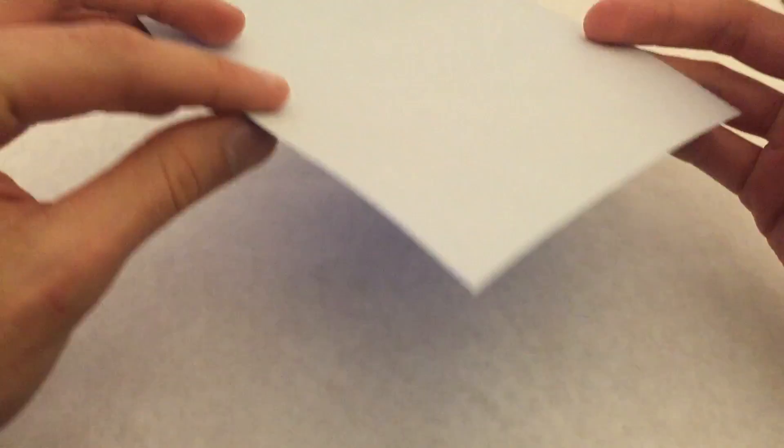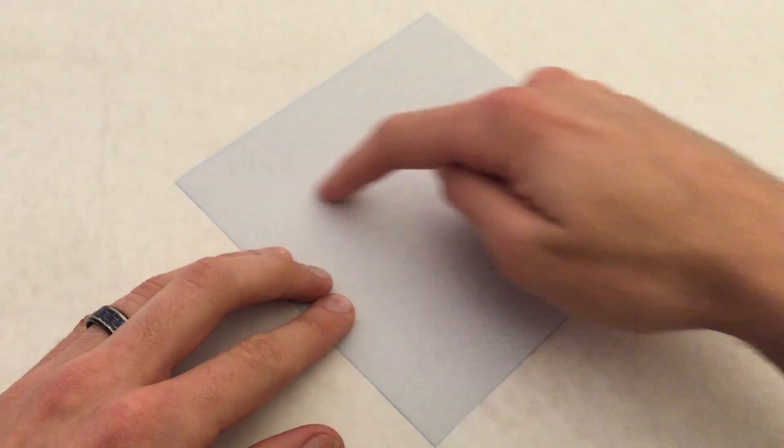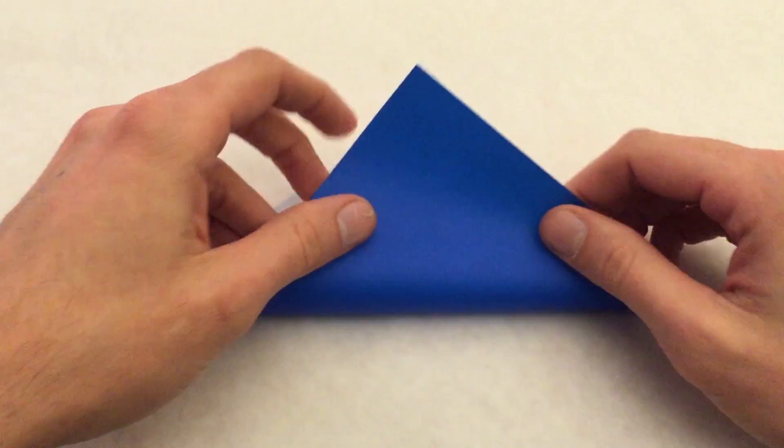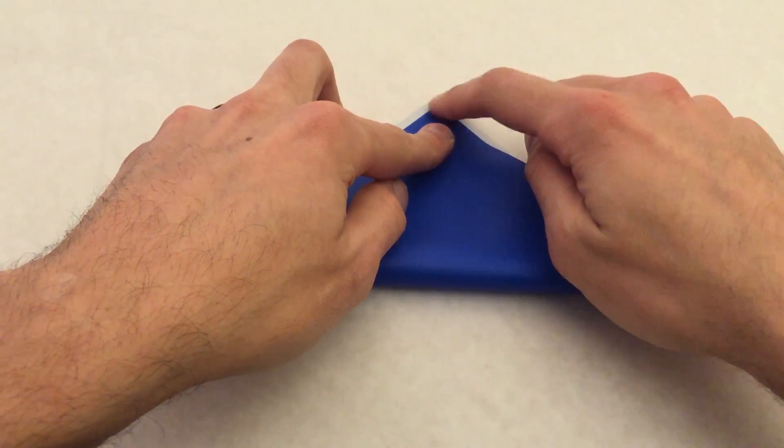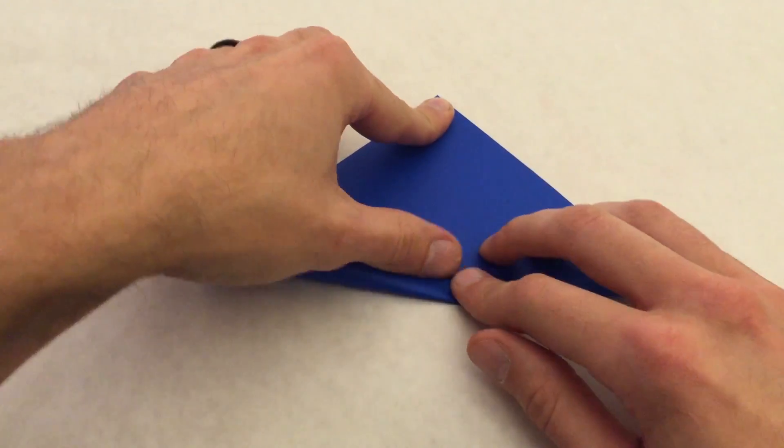We're going to start with the colored side down. We'll start by folding in half along this diagonal. Just line up these two corners at the top and crease.